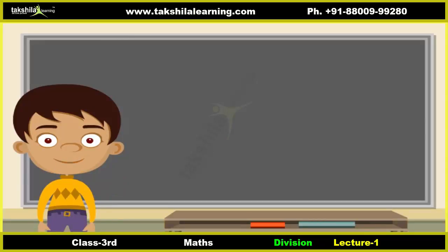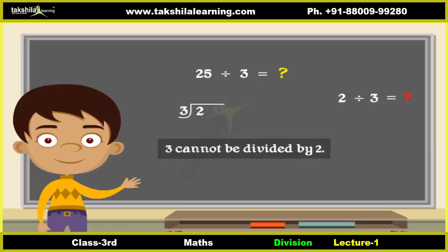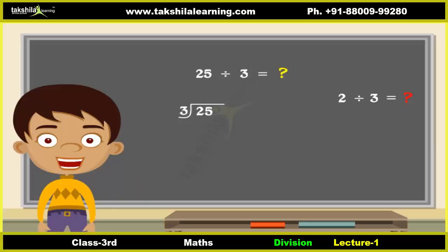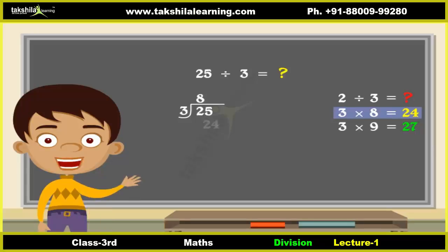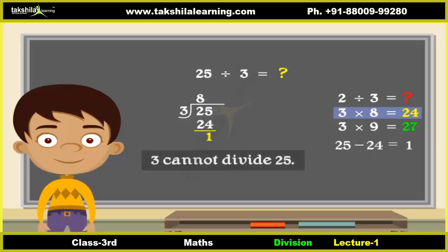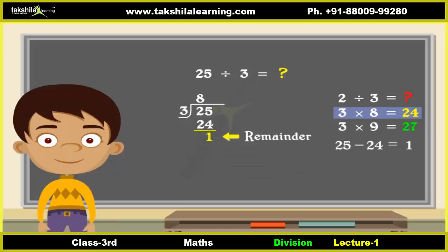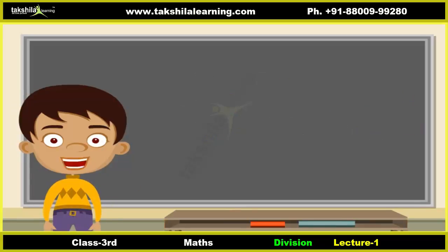Let's now solve another division question: divide twenty-five by three. The first number from the left in twenty-five is two. We cannot divide two by three, so we take both numbers from twenty-five. Now divide twenty-five by three. Three multiplied by eight is twenty-four, and three multiplied by nine is twenty-seven. Twenty-seven is more than twenty-five, so we take three multiplied by eight, which is twenty-four. Put eight right above twenty-five and the answer below. Subtract: twenty-five minus twenty-four is one. Here twenty-five is the dividend, three is the divisor, eight is the quotient, and the remainder is one.